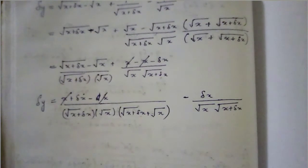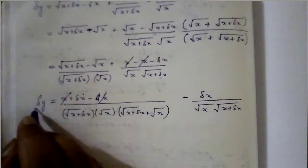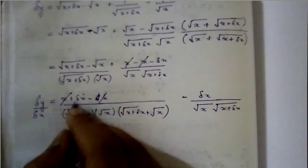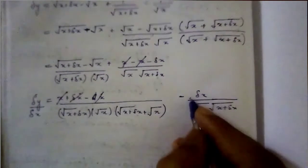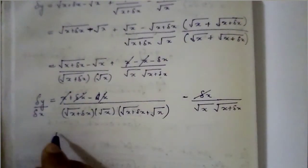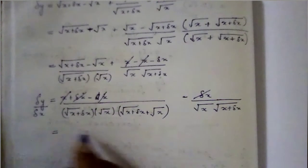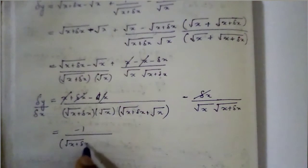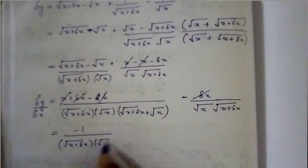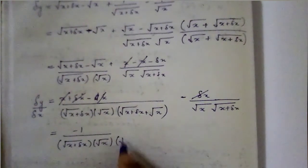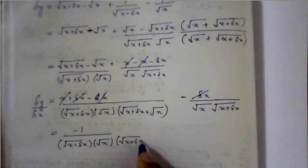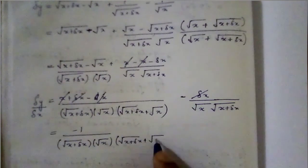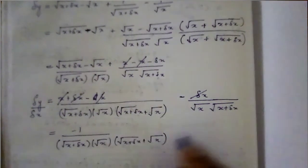Dividing both sides by del x, we can cancel del x. For the first part this gives 1 by [root(x + del x) plus root x]. For the second part, after rationalizing, we get minus 1 by root(x + del x) into root x into [root x plus root(x + del x)].